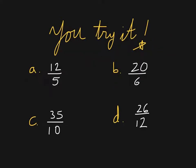I would like you to try it. Please convert the following improper fractions into mixed numbers using that multiplication method: 12/5, 20/6, 35/10, and 26/12.